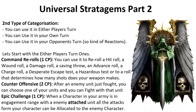Counter Offensive, for two command points: use it in the fight phase after an enemy unit just fought — select a unit from your army that is eligible to fight and fight with it. This is great if you've been charged in multiple places. Epic Challenge: when a character from your army is within engagement range of one or more units with an attached character, you can target that character — all your attacks gain the Precision ability.